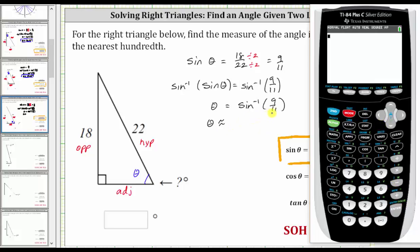And we enter inverse sine of 9/11. If we press second sine, we do get the inverse sine function. And then we enter nine divided by 11. Close parenthesis and enter. Notice how there's a three in the thousandths place value or the third decimal place. And therefore we round down. Theta is approximately 54.90 degrees.